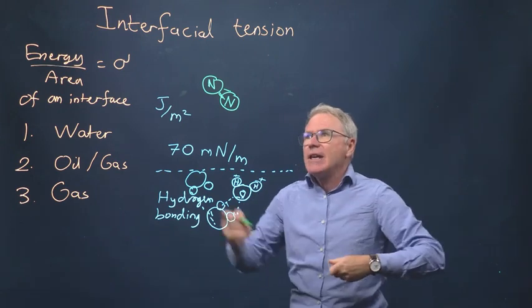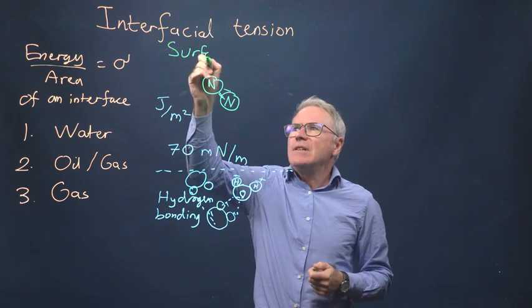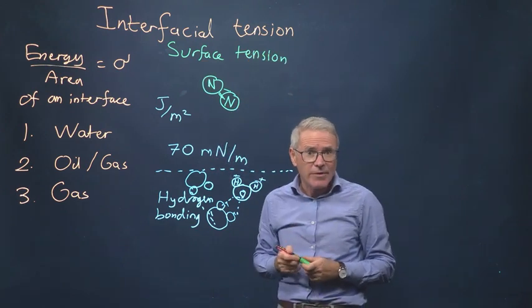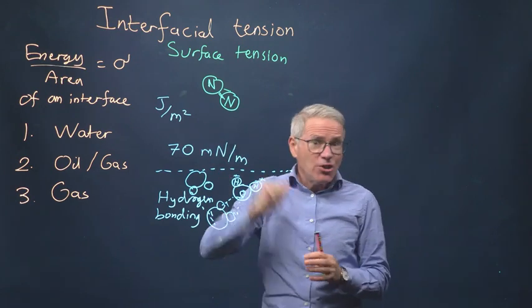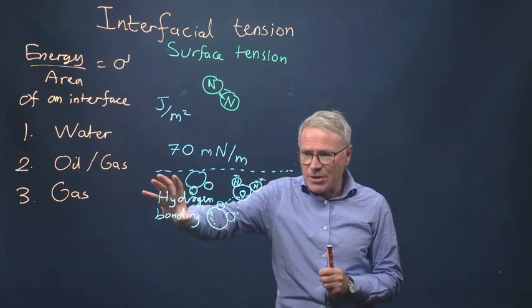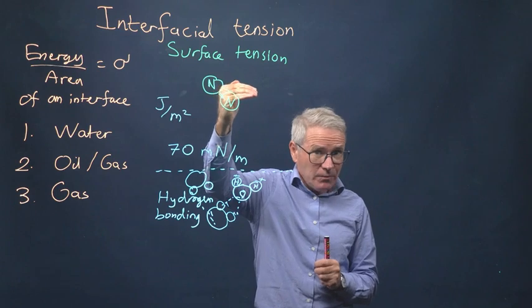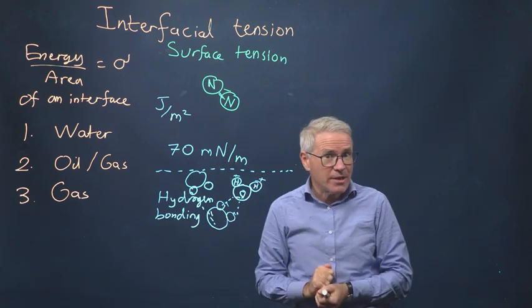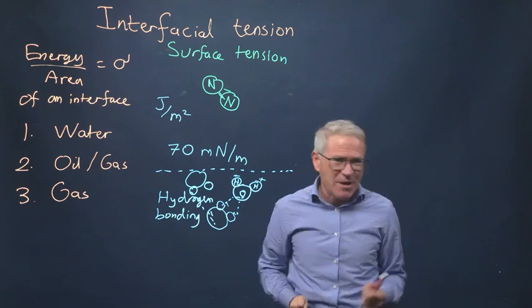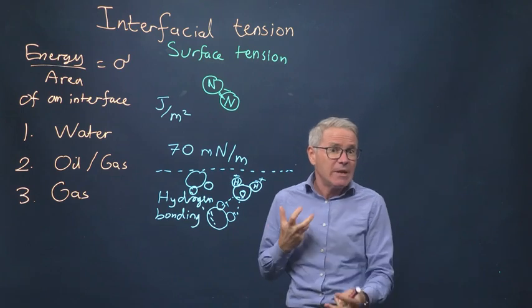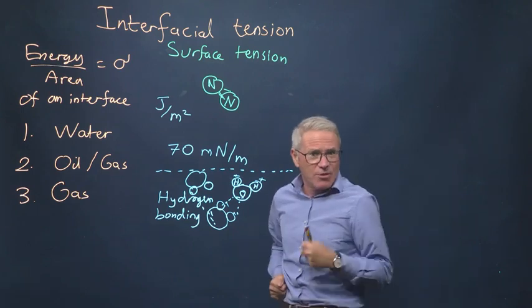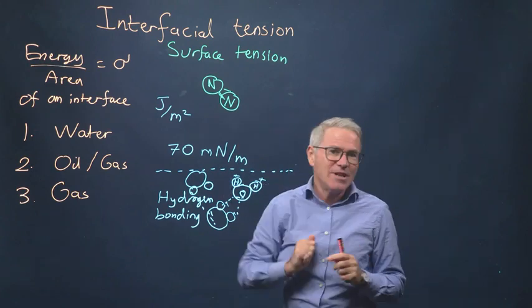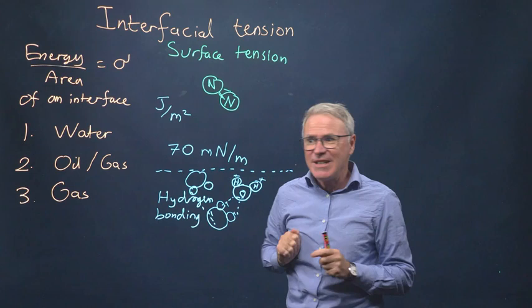The next thing I wanted to mention is many people confuse interfacial tension with surface tension. Surface tension is a specific form of interfacial tension. A surface tension is the energy per unit area of an interface between a substance, say a liquid, and its vapor. So it's a specific, well-defined example. However, for the purposes of our flow in porous media, where we're deep underground with lots of things going on, we're going to have two very distinct phases. We're going to have water and supercritical CO2, or we're going to have oil and supercritical CO2 and brine. So we're not really interested in surface tension. We're interested in interfacial tension.